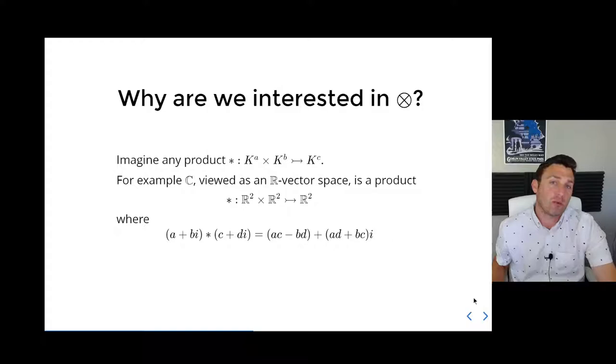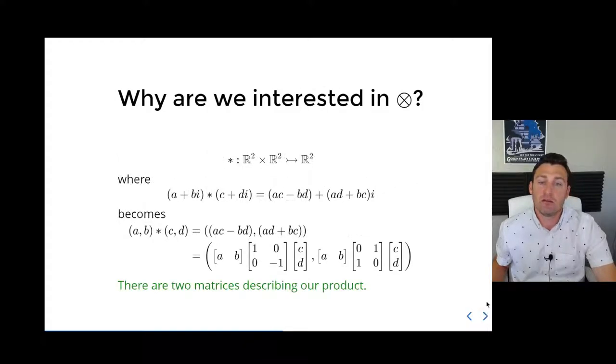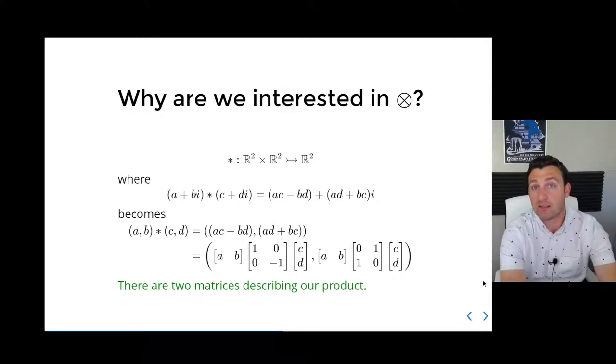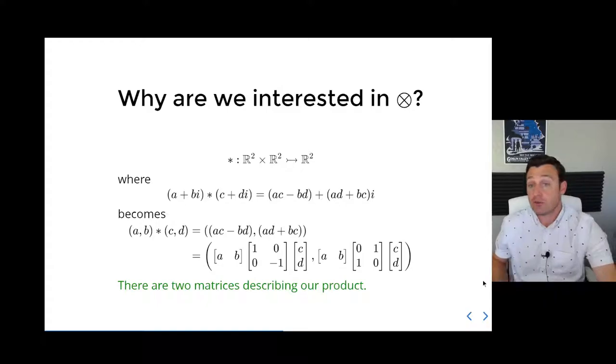We know what the product is: (a + bi) × (c + di) equals (ac - bd) + (ad + bc)i. That's written in the coordinates we prefer for the complex numbers. If we translate these into pairs, as in drawing them on the xy-plane, then we think of this product as manipulating these two vectors. The first coordinate could be thought of as taking the first row vector times a 2×2 matrix times a column vector, producing a 1×1 matrix. In the second coordinate, we get a different matrix. These two matrices describe the product in its entirety.